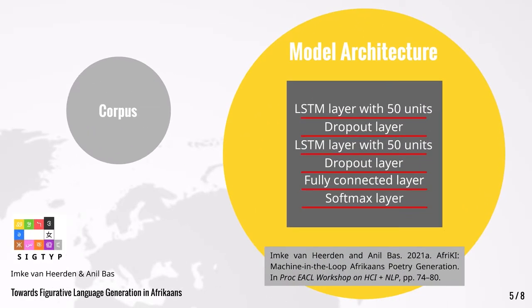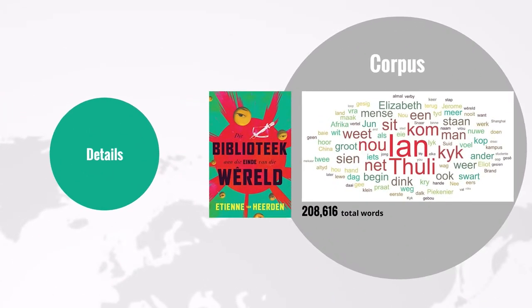I will now discuss the model architecture and data set. Please note that we follow the exact same approach of our previous work. We use a two-layer LSTM architecture, stacking LSTM layers followed by dropout layers, then a fully connected layer and a softmax layer. Since we did not have access to a large-scale data set, we followed an alternative approach and trained on a single Afrikaans literary novel, The Library at the End of the World. The word cloud shows its most commonly used words after stop words were removed.